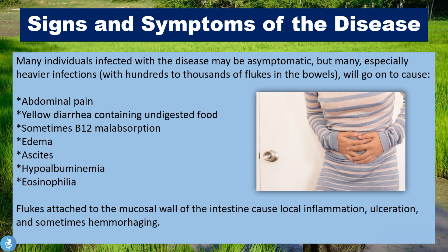The patient may also suffer from edema, ascites, and hypoalbuminemia, because if these flukes line the intestine we cannot absorb our proteins. They will also have eosinophilia — eosinophils are a type of white blood cell that increase especially during an ongoing parasitic infection — so blood tests in these patients will show hyper-eosinophilia. The flukes attached to the mucosal wall of the intestine will also cause local inflammation, ulceration, and sometimes hemorrhaging, so they will cause these patients to bleed internally.